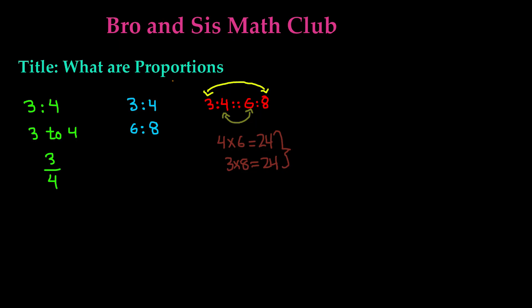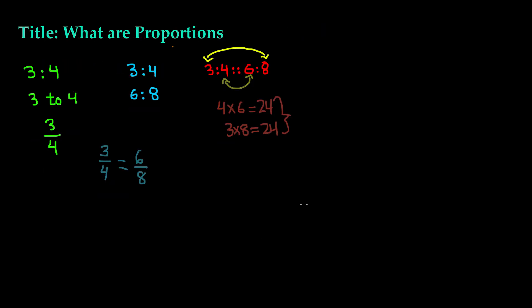Another way we can set up this proportion is through fraction form. We write three fourths equal to six eighths. There are two ways to verify this. The first is asking what times three gives you six and what times four gives you eight — three times two gives us six, and four times two gives us eight. Since the multiplier is the same, the proportion is true. The other way is cross multiplication: multiply three by eight and six by four — both give 24 — so this proportion is true.